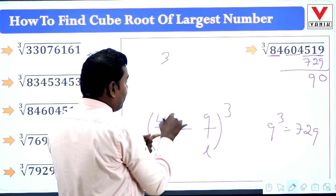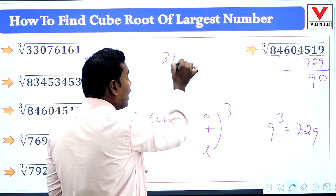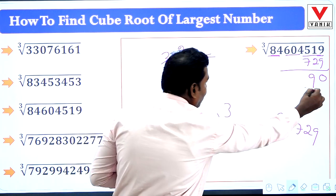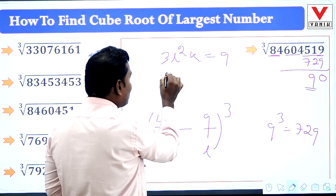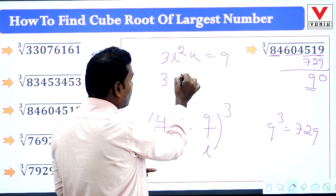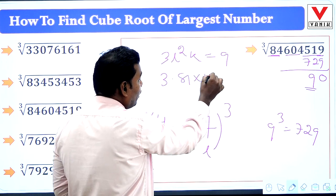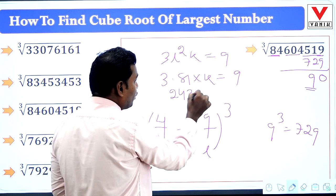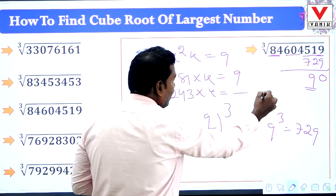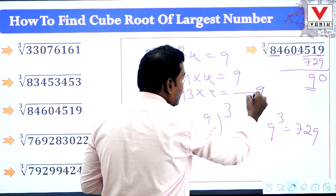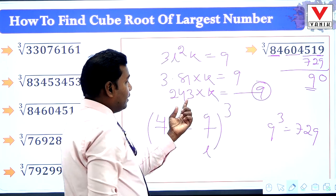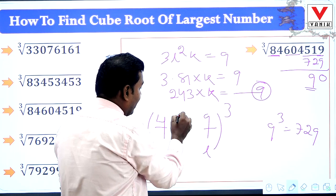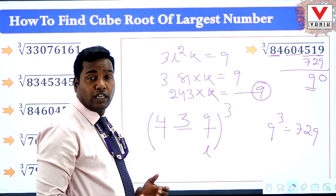Now find the middle term using formula 3L²K = 9. L is 9, so 3 × 81 × K = 9, giving 243K = 9. The unit digit of 243 × K must be 9; since 3 × 3 = 9, K = 3. So the cube root is 439.